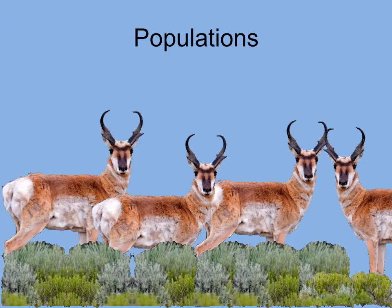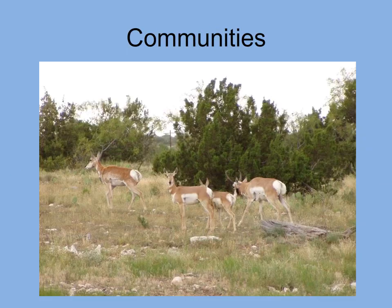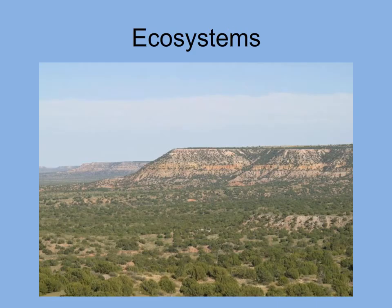A group of organisms of the same species is a population. Organisms capable of breeding with one another to produce viable offspring are in the same species. A collection of different species that interact in a certain area is called a community. A community plus the non-living components — such as water, minerals, soil, and climate — is an ecosystem.